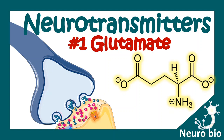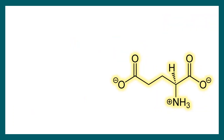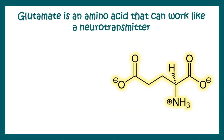Welcome to the video series of neurotransmitters. This is the first video and in this video we'll look at glutamate. Glutamate is one type of amino acid, and in our nervous system, glutamate can work like a neurotransmitter.